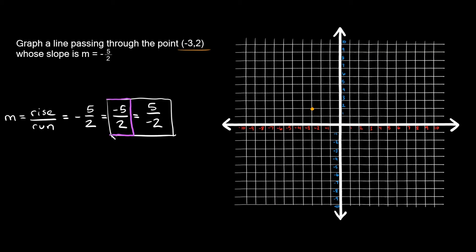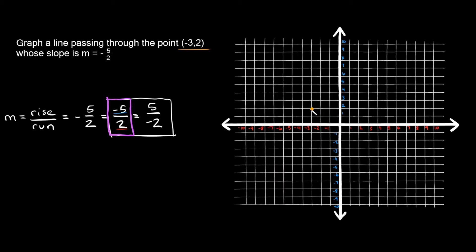Let's use negative 5 over 2 first. The top number is the rise, so negative 5 means we go down 5 spaces. The positive 2 is the run, so we go over to the right 2 spaces. Starting from (-3, 2), we go down 5 — one, two, three, four, five — and then over 2 — one, two. We've found another point on the line, so now we can graph it.